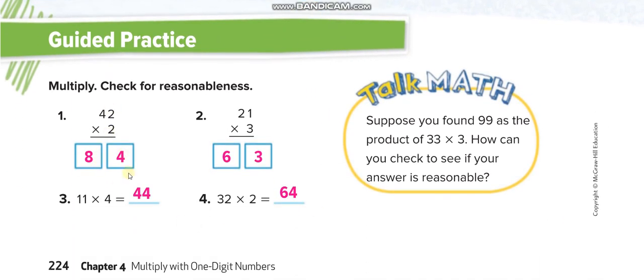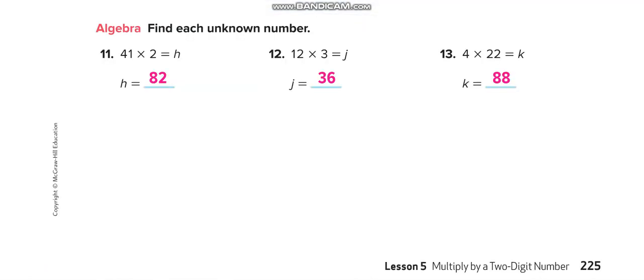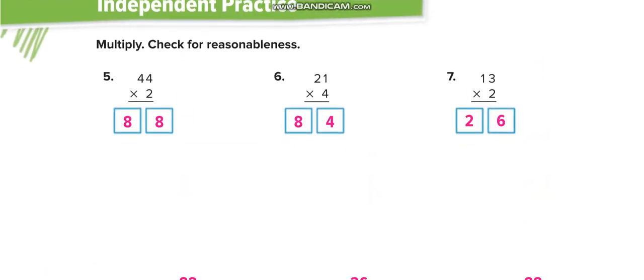2 times 2 is 4, 2 times 4 is 8, 3 times 1 is 3, and 3 times 2 is 6. 2 times 4 is 8, and 2 times 4 is 8. 4 times 1 is 4, 4 times 2 is 8, 2 times 3 is 6, and 2 times 1 is 2.